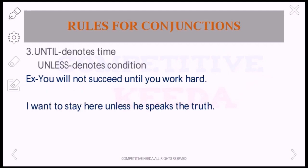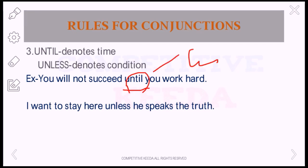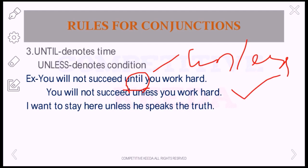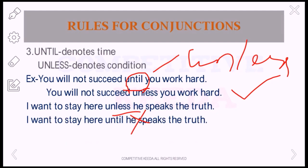Rule number three: 'until' denotes time and 'unless' denotes condition. For example, 'You will not succeed until you work hard' — this is a conditional sentence, so we should use 'unless' instead of 'until.' The correct answer is: 'You will not succeed unless you work hard.' For the second example, 'I want to stay here unless he speaks the truth' — this denotes time, so we should use 'until.' The correct answer is: 'I want to stay here until he speaks the truth.'